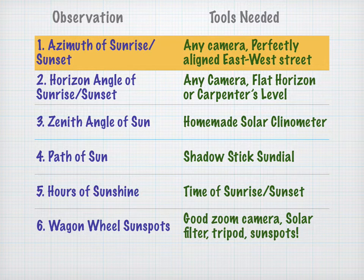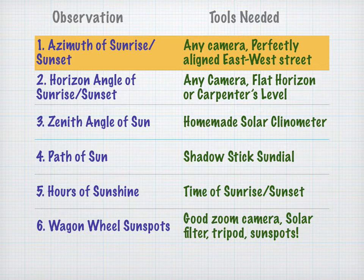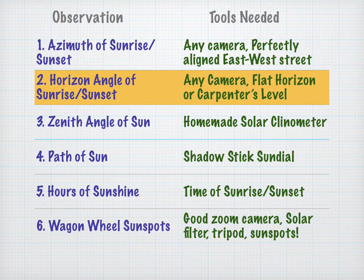The first is azimuth, or compass direction of sunrise and sunset. All you need is any camera, and preferably a perfectly aligned east-west street for best results.